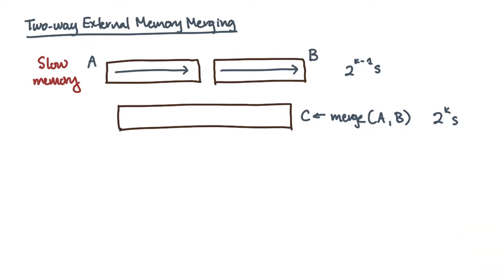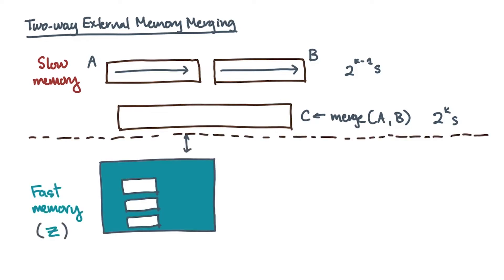To execute this merge, maintain three buffers in fast memory. Each fast memory buffer will hold L elements corresponding to the transaction size. Use two buffers for storing elements from A and B, and the third for storing output elements. I'll refer to the fast memory buffers as A-hat, B-hat, and C-hat.